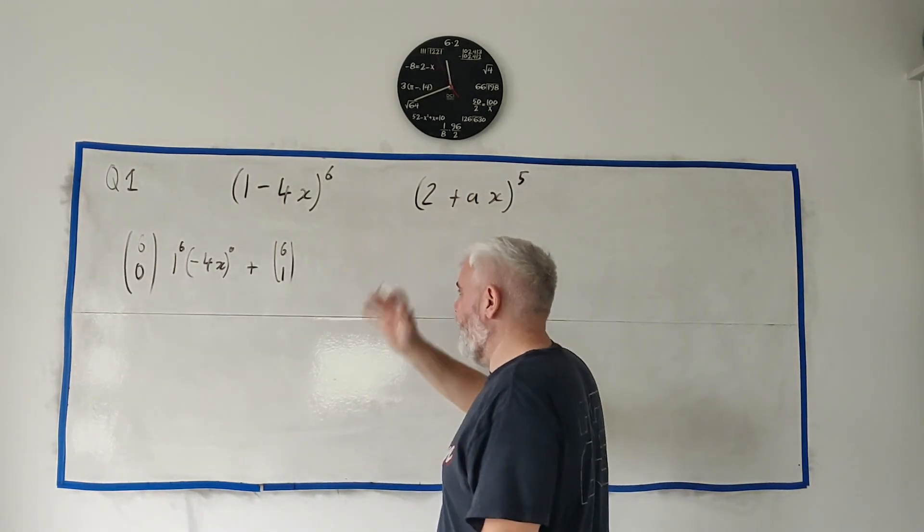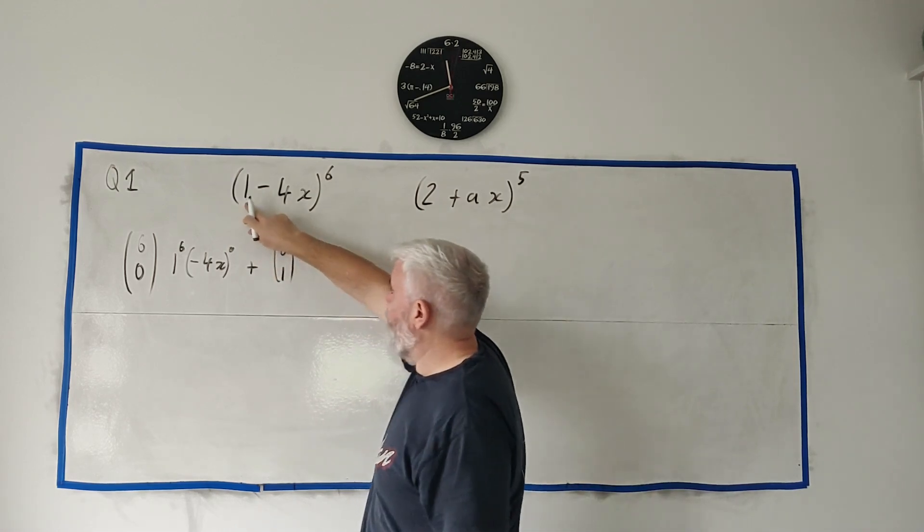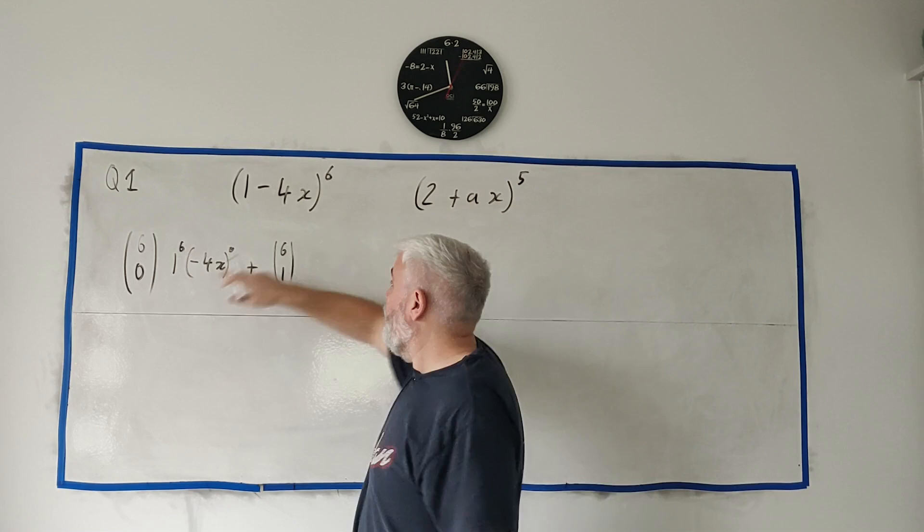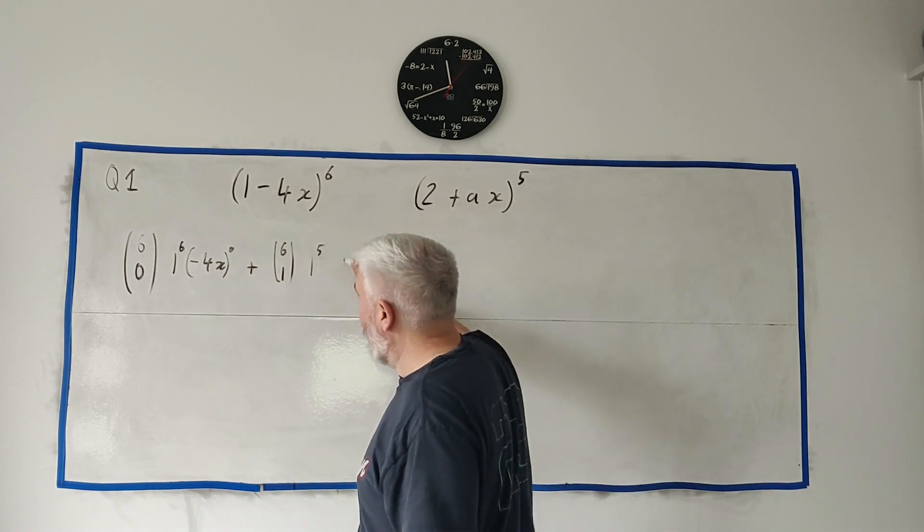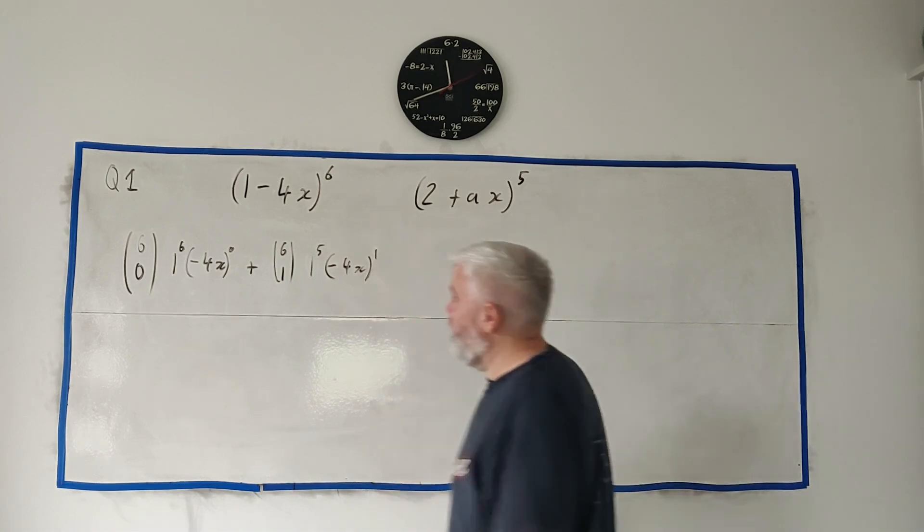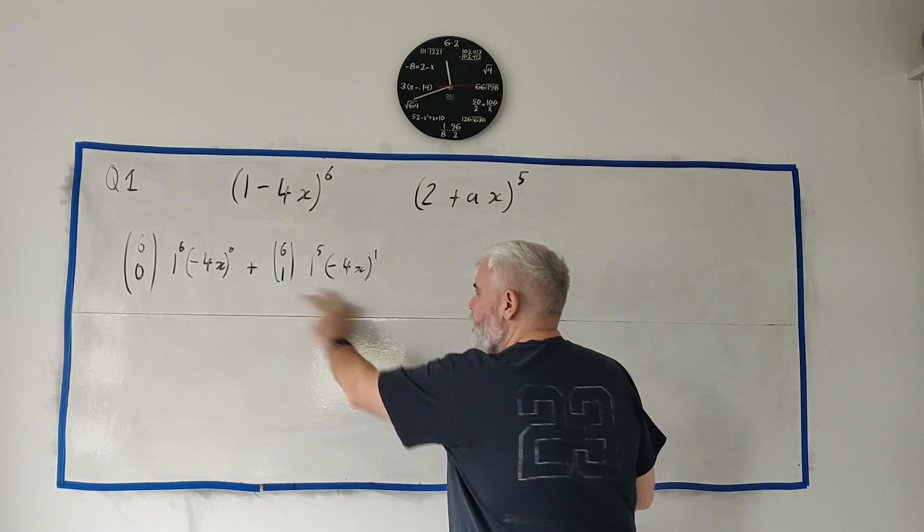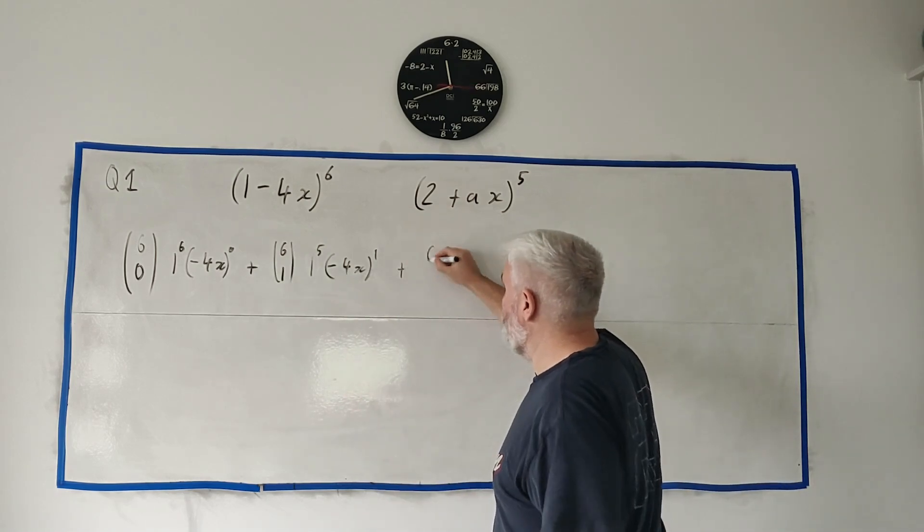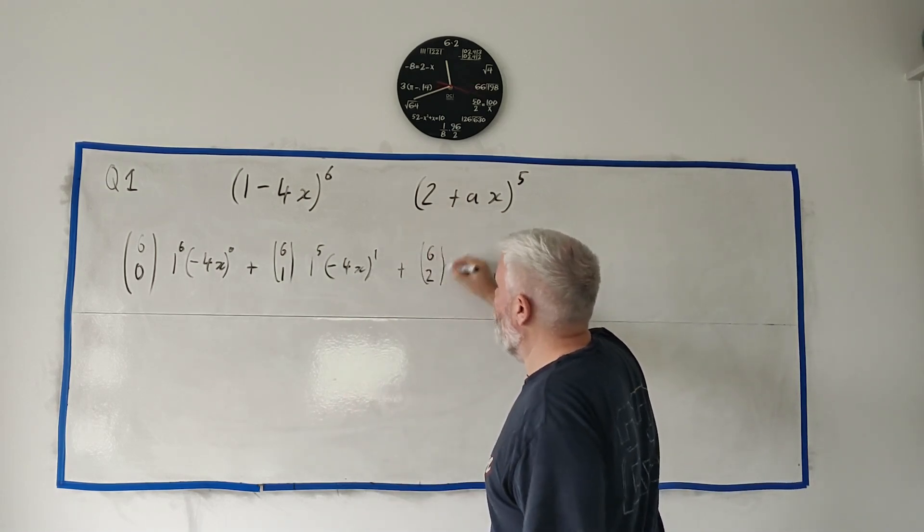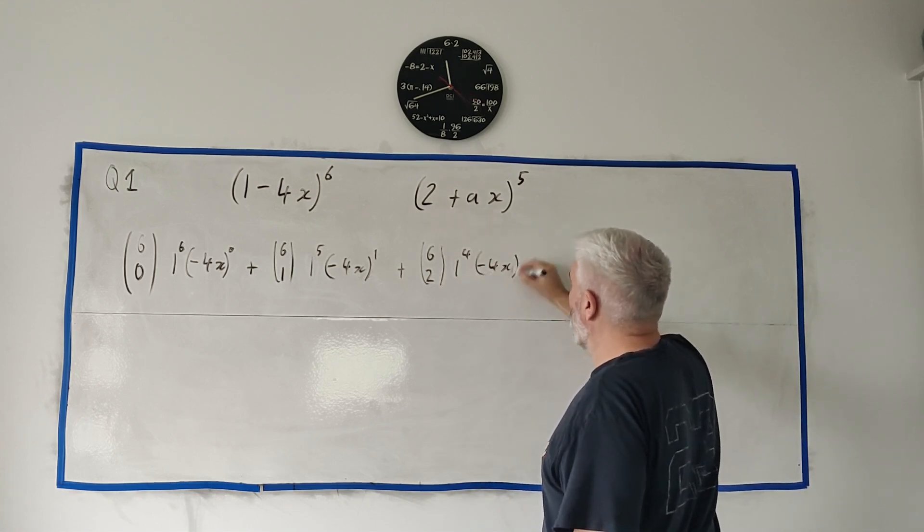6 choose 1 is 6 and I don't know the rest of them off the top of my head. Next number is the first term, instead of if we start with 6 we go down 1, so that's a 5. Next term if we start with 0 we go up 1, so that's the power of 1. This will give us an x, still we're not actually interested in this one. It's the next one we're interested in. 6 choose 2, 1 to the power of 4, -4x to the power of 2.